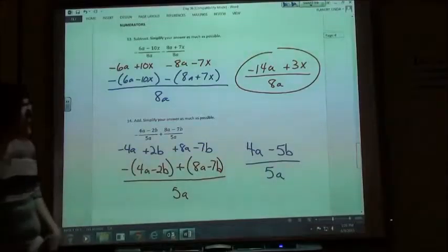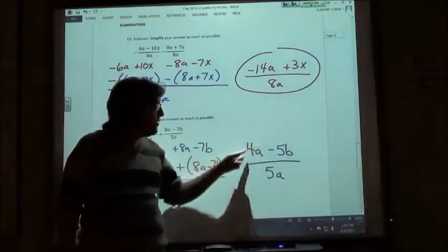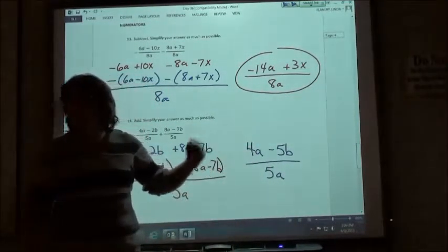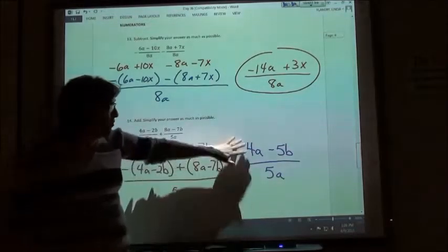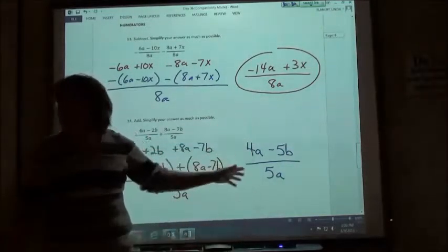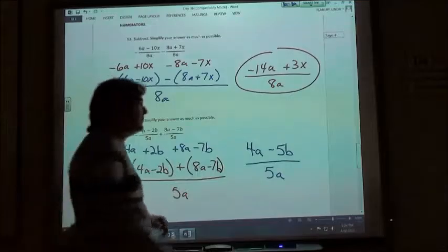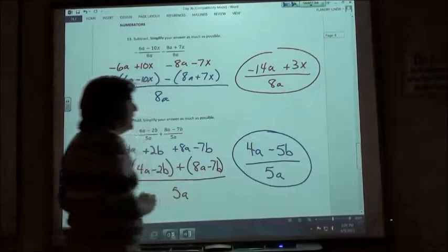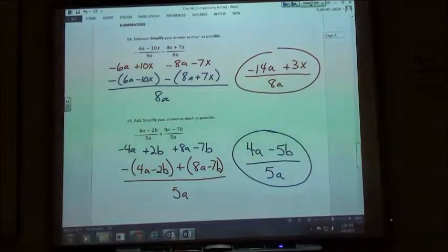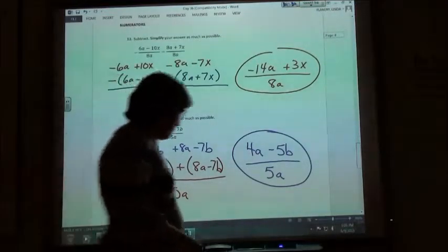And again, I can't reduce this down because I have to divide all three of them by the same thing and all three of them don't have anything in common. This would be at 10a, then I could reduce them all down by 5. In this case, can't reduce it. Just going to leave that for my answer. Are they going to have some of that on there? Yes, they will.